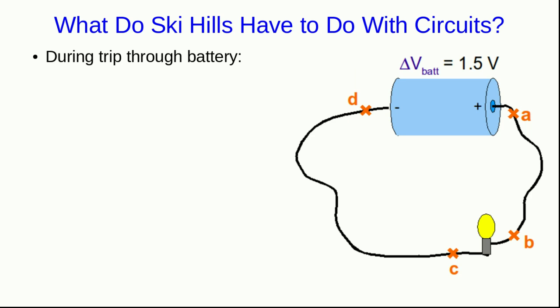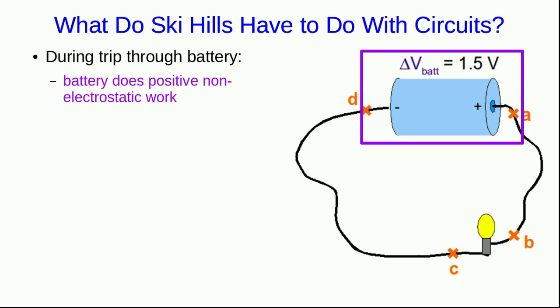Now think about a simple circuit, like a battery hooked up to some load such as a light bulb. During the trip through the battery, the battery does positive non-electrostatic work on the charges. And meanwhile, because they're moving against the E field—